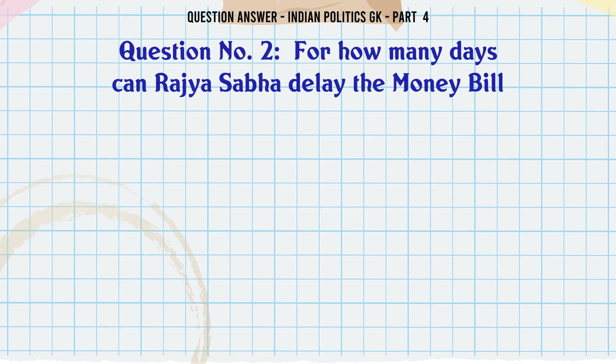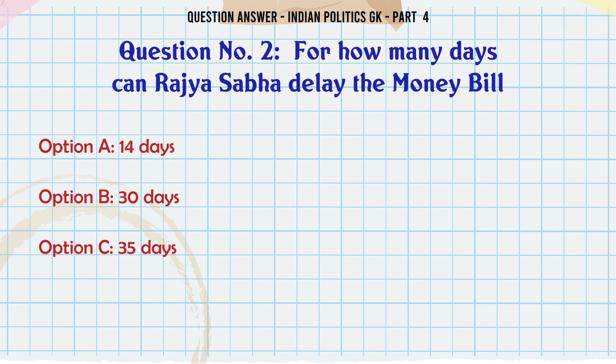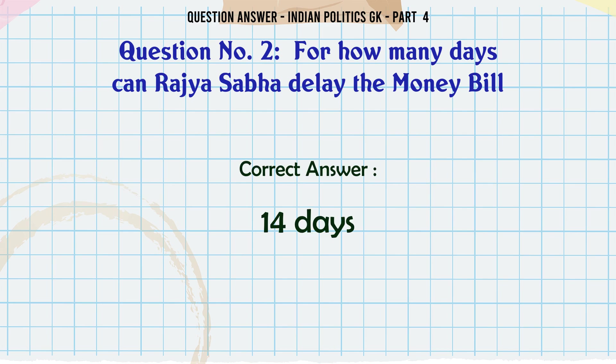For how many days can Rajya Sabha delay the money bill? A. 14 days. B. 30 days. C. 35 days. D. 45 days. The correct answer is 14 days.